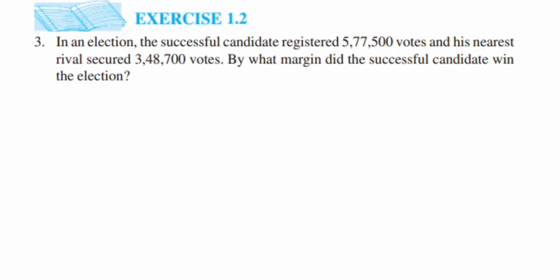By what margin did the successful candidate win the election? So we know that the first candidate got 5,77,500 votes and the second one, who was closer to him in the election, got 3,48,700. They're asking how many more votes he got compared to the other candidate.